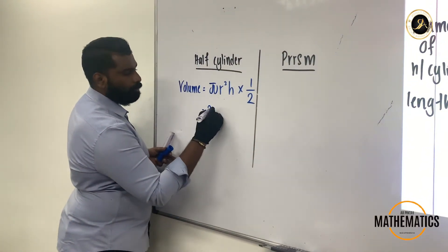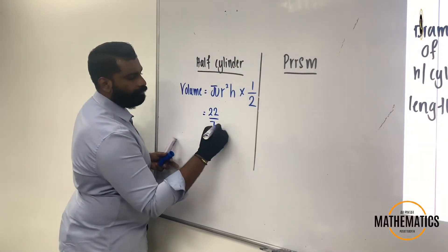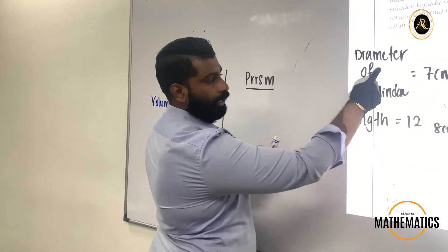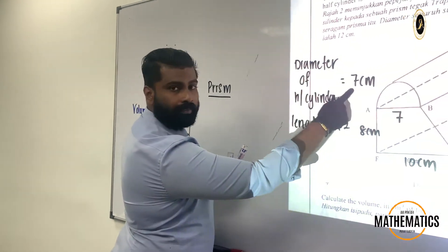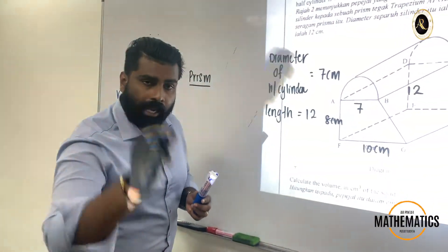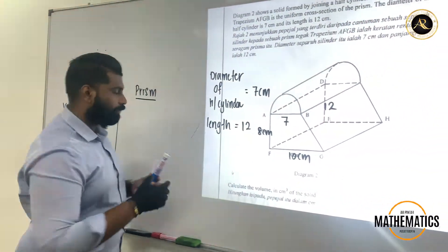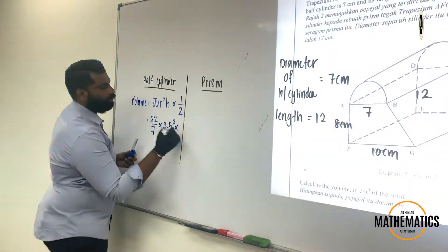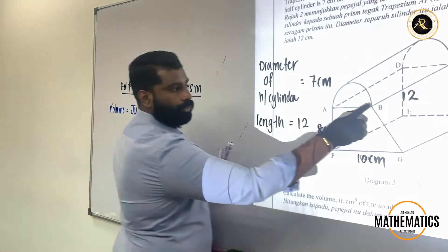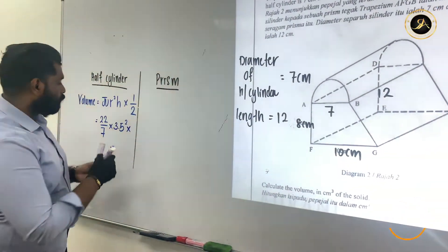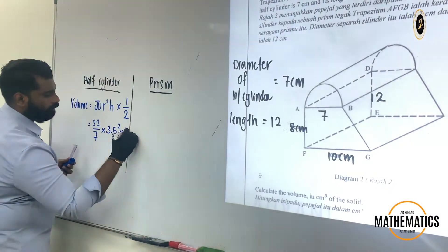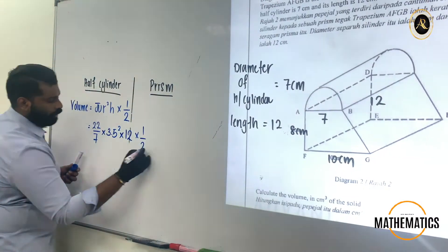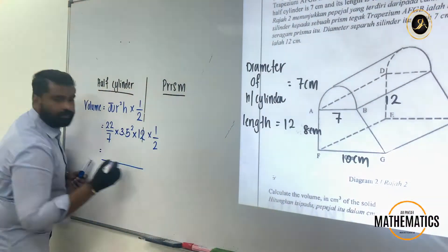So the formula for this will be volume equals to pi r square h times with 1 over 2. Why 1 over 2? Because of half. My pi value will be 22 over 7. My radius, if you notice here, this is the diameter. When they talk about diameter, diameter is 7. We need radius. Radius is half of the diameter which means 3.5 square times with your height. This is your height, the number here is 12. So we have times with 12, and don't forget, here we have times with 1 over 2.